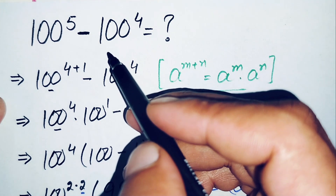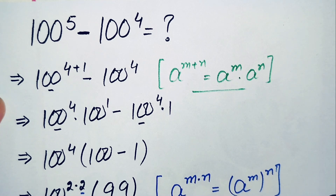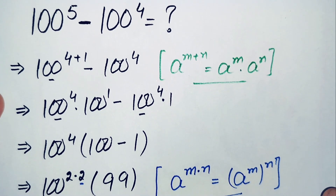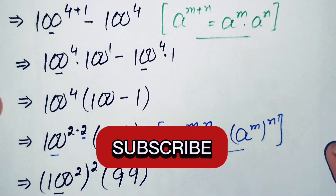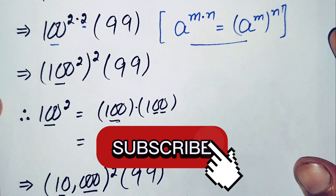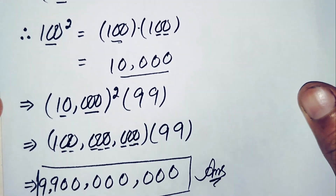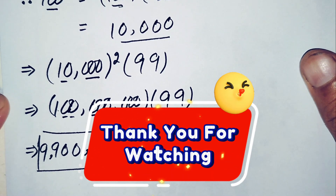So finally, 9 billion 900 million is our answer and the value of this nice and interesting simplification math problem. If you liked this video, don't forget to subscribe to my YouTube channel for more interesting math videos. Thanks for watching.